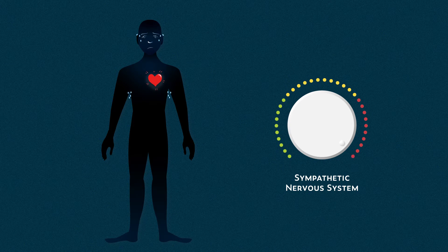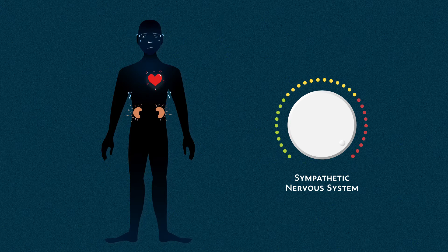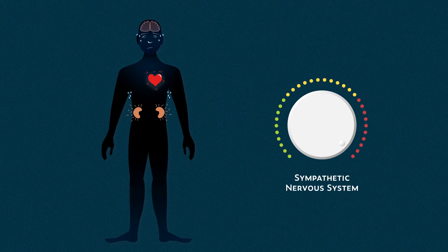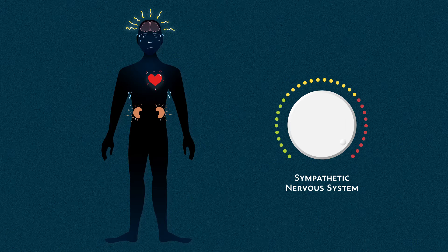The HPA axis releases cortisol, the body's main stress hormone. Cortisol influences specific areas of the brain: the amygdala, hippocampus, and prefrontal cortex. All areas that are heavily involved in cognitive processing.